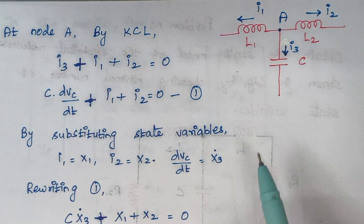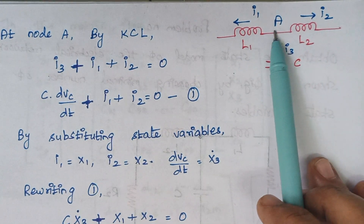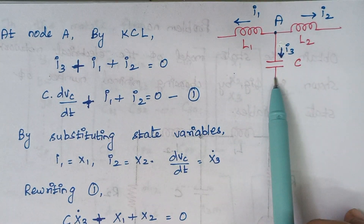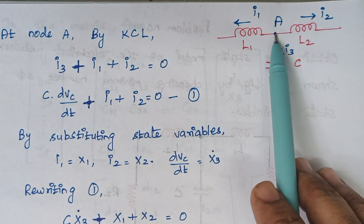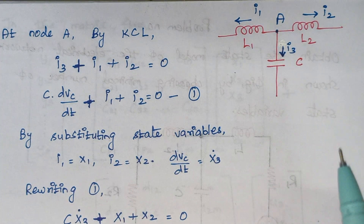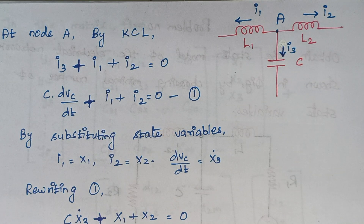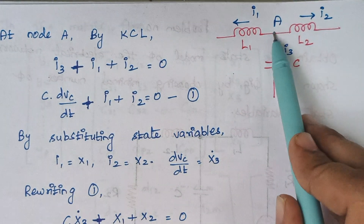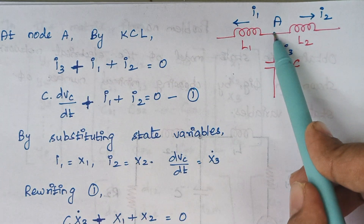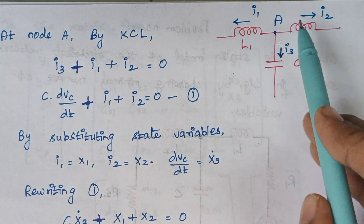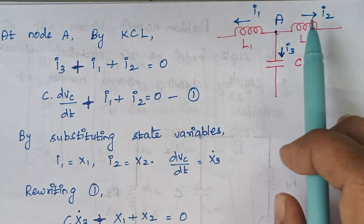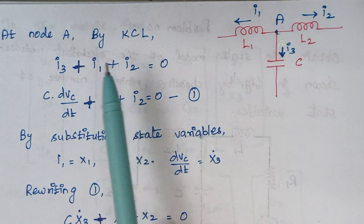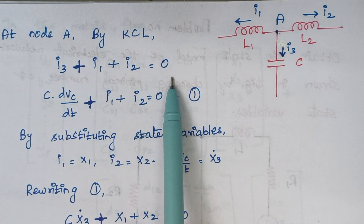Now we are going to consider node A. To this node A, three elements are interconnected. When we apply Kirchhoff's current law at node A: the sum of currents flowing towards the junction is equal to the sum of currents flowing away from the junction. From this node, all three currents are moving away, so I1 plus I2 plus I3 is equal to 0.